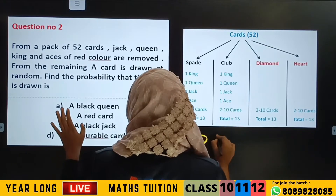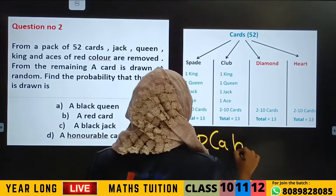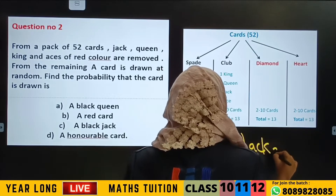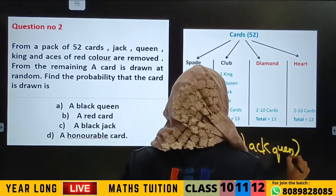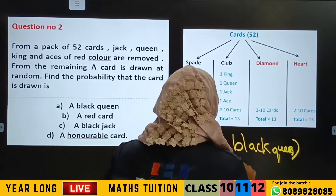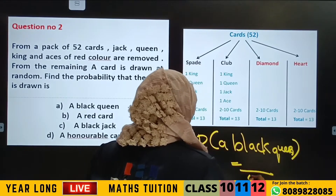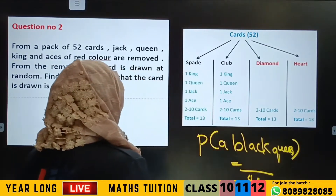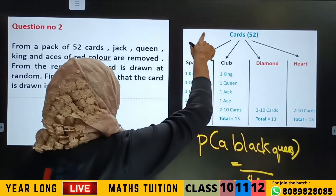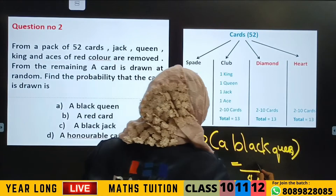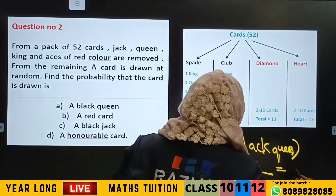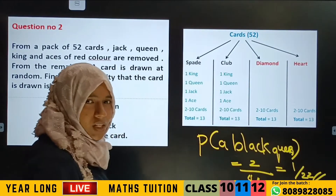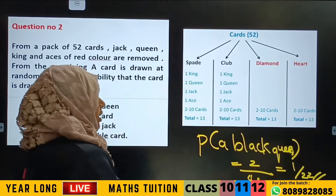Probability of getting a black queen. The black queen chances are 2. So the probability is 2 by 44, which is equal to 1 by 22. Clear? Yes.